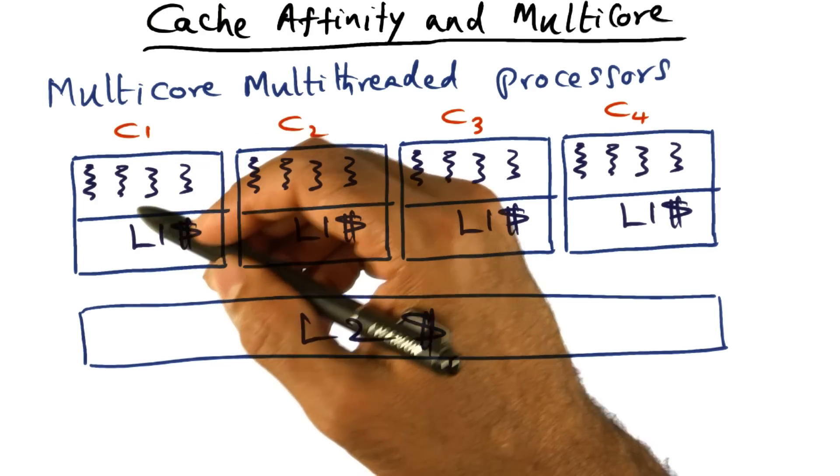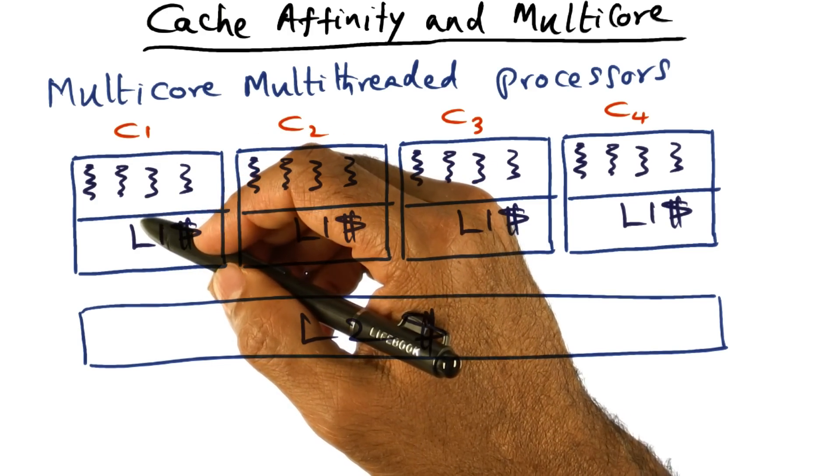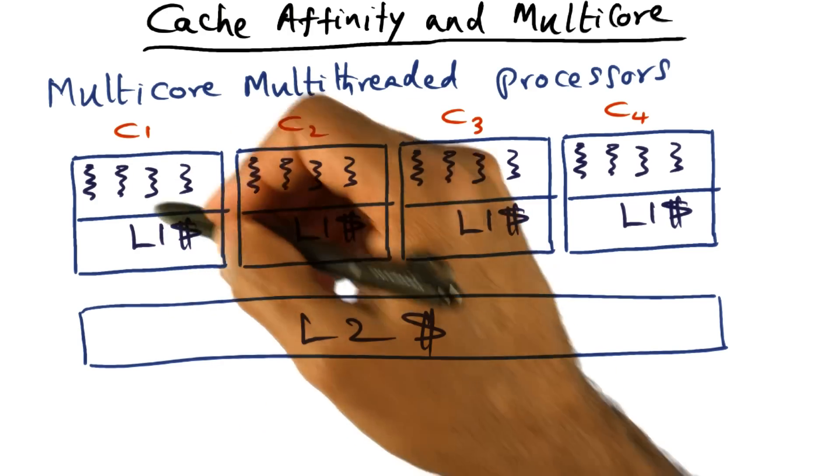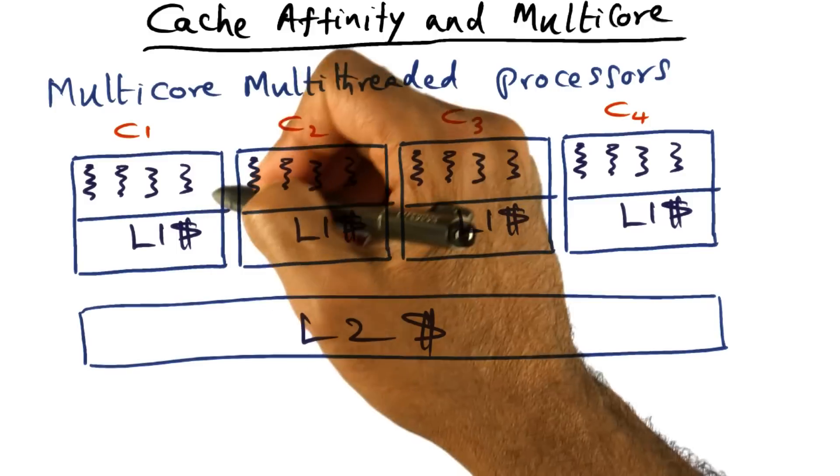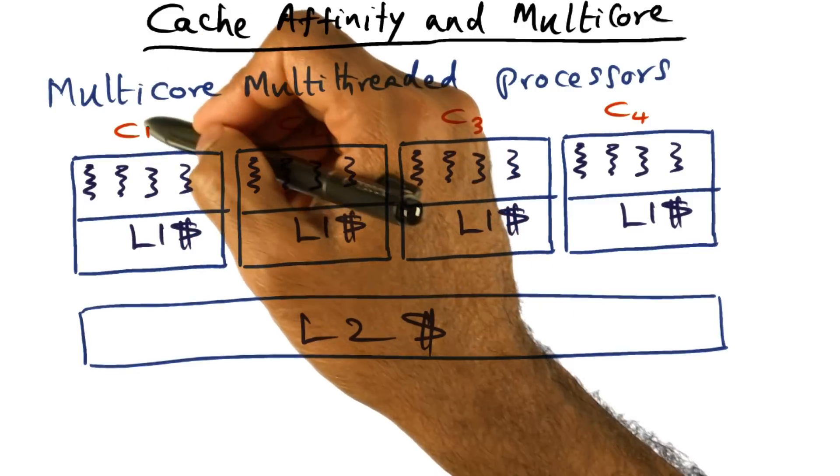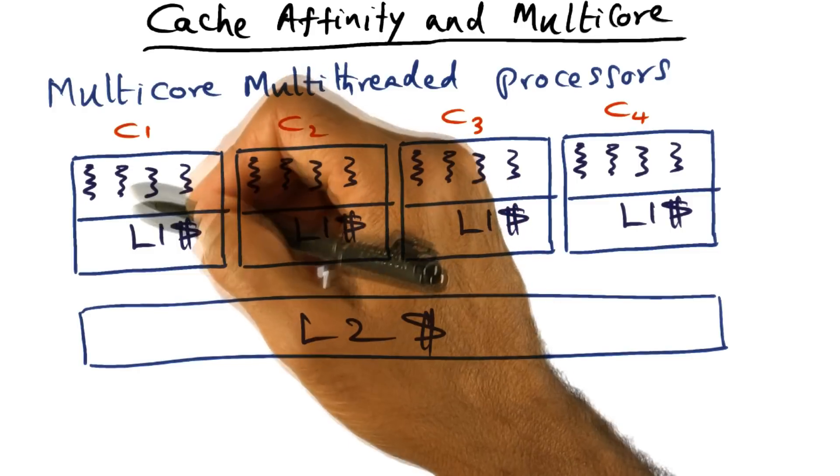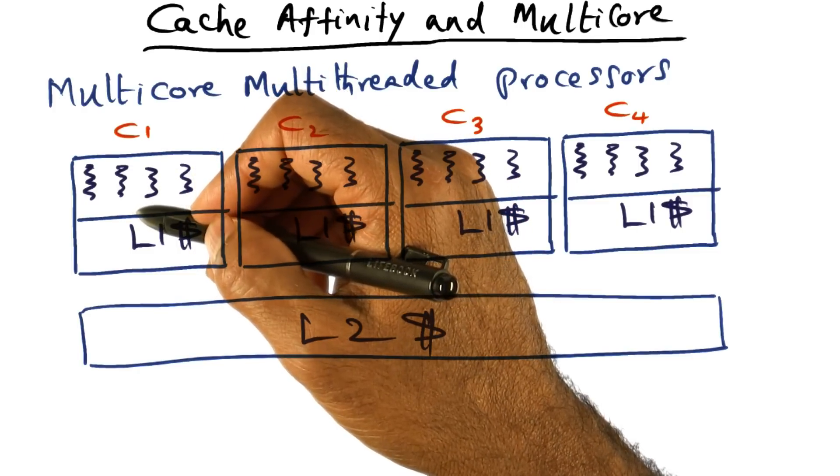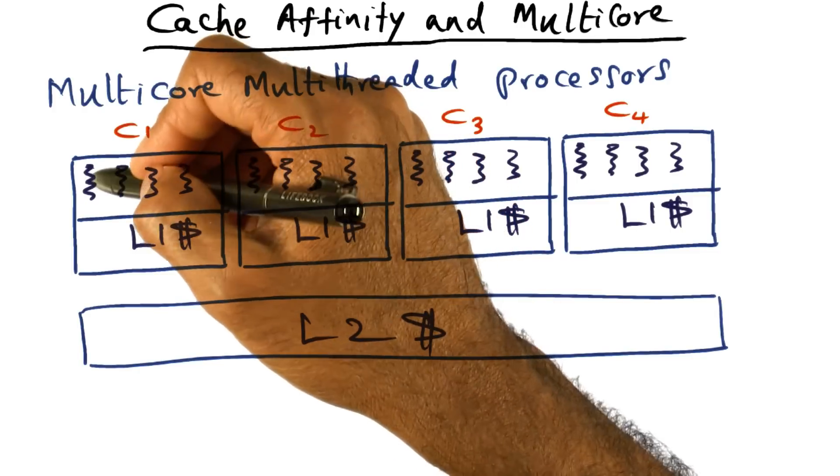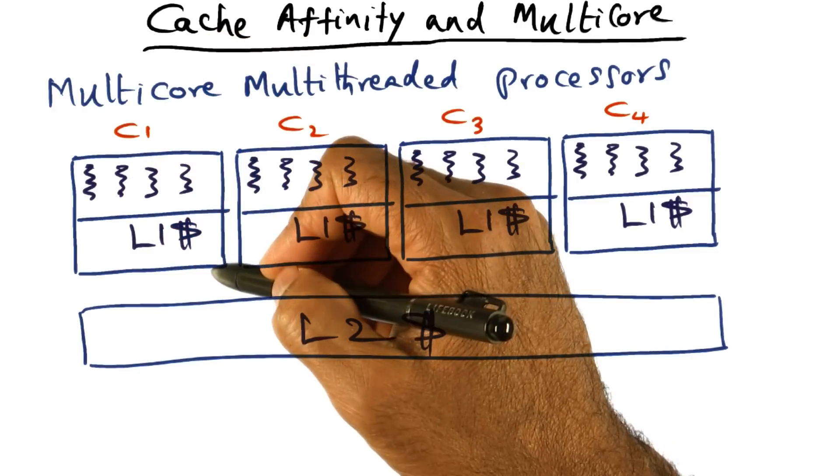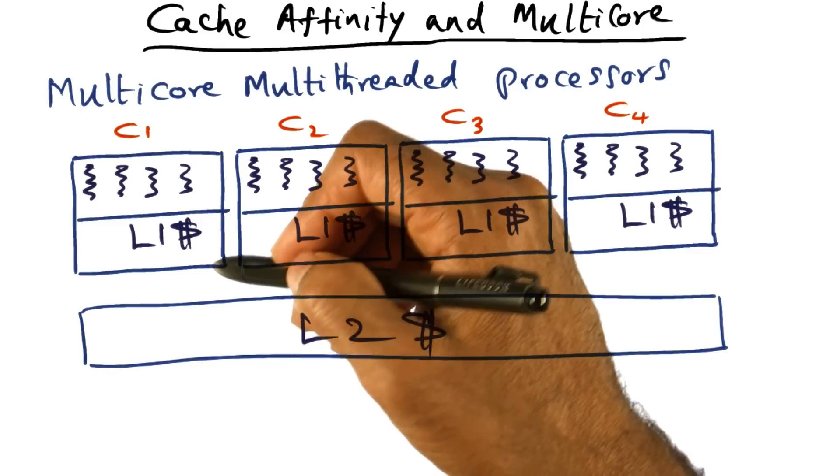So here again, there's a partnership between the operating system and the hardware. The hardware is providing these hardware threads inside each core. And what the operating system is doing is picking which threads that it has in its pool of runnable threads and mapping them onto the threads that are available in the hardware.